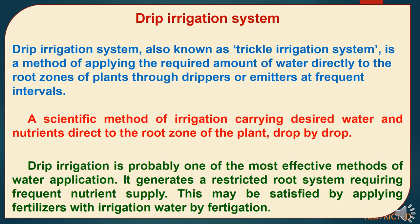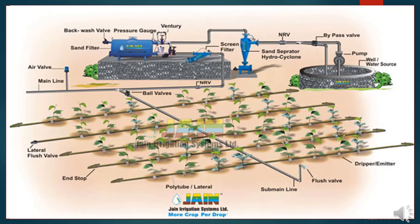Drip irrigation system, also known as trickle irrigation system, is a method of applying the required amount of water directly to the root zones of plants through drippers or emitters at frequent intervals. It is a scientific method of irrigation carrying desired water and nutrients directly to the root zone of the plant drop by drop. Drip irrigation is probably one of the most effective methods of water application. It generates a restricted root system requiring frequent nutrient supply, which may be satisfied by applying fertilizer with irrigation water through fertigation. The different components of drip irrigation and how they are structured for the supply of irrigation water to plants are shown in the accompanying picture.